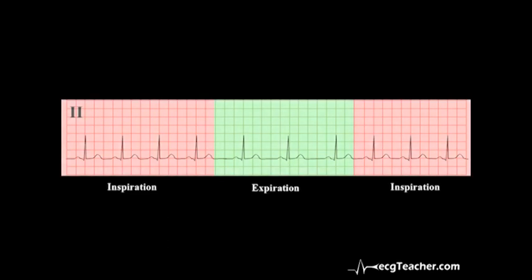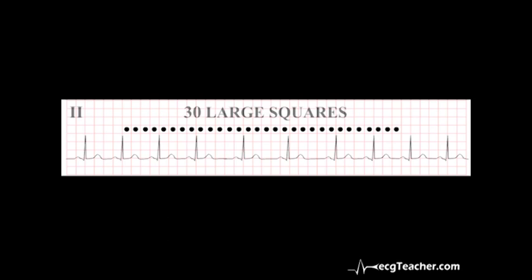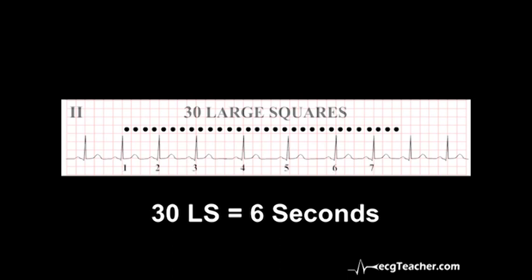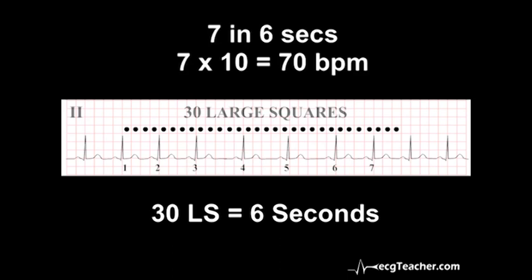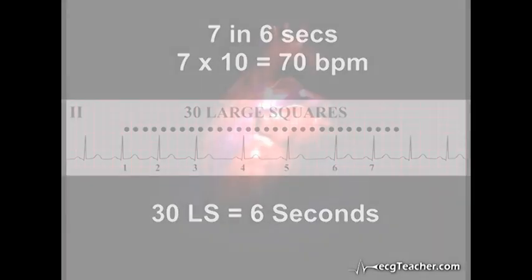We cannot use the RR interval technique to calculate heart rate in this case, as the RR interval varies. When calculating the heart rate from an ECG in the presence of an irregular rhythm, count out 30 large squares. Now, remembering that 5 large squares equates to 1 second, 30 large squares corresponds to 6 seconds. Count the number of R waves in these 30 squares. In this case there are 7. 7 beats in 6 seconds gives a heart rate of 70 beats per minute.